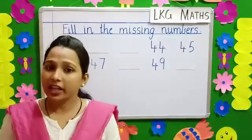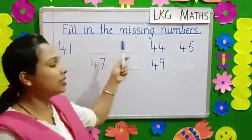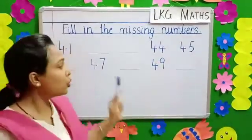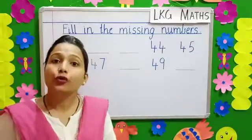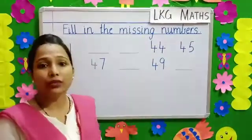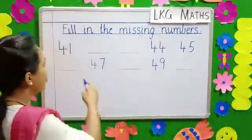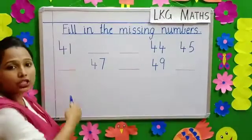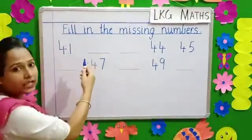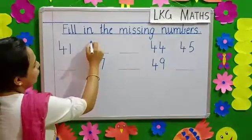Children, our next topic is fill in the missing numbers. You see blanks over here. We have to fill in these blanks with the numbers. So, what number is here? 41. We have to write the next number. 42.